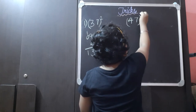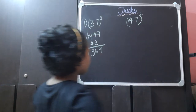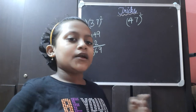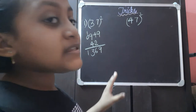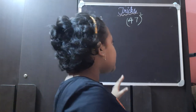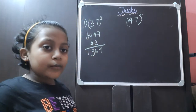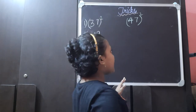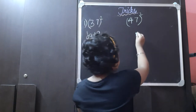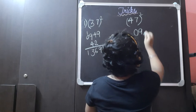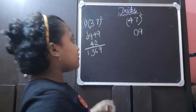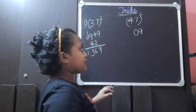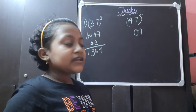Now let us learn the new method. For example, 47 square. First we check whether the number is greater than 50 or less than 50. This number is less than 50. Then we see how much less than 50 it is — it is 3 less than 50. We find 3 square which is 9, and write it.